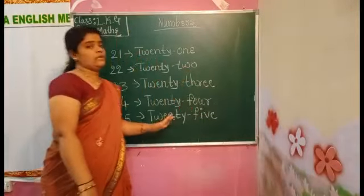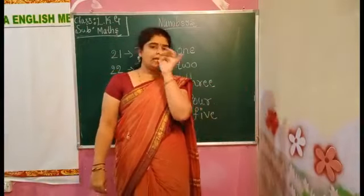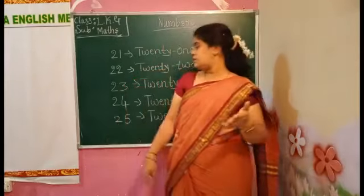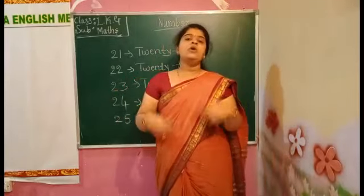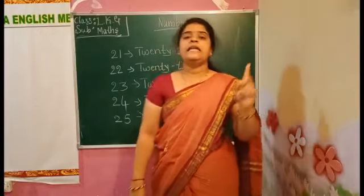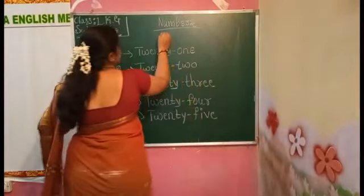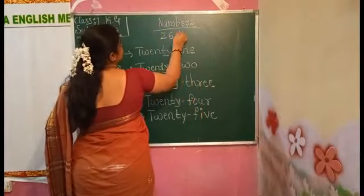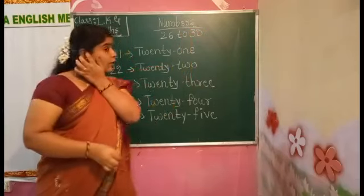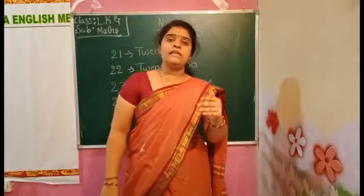21 to 25 — five numbers we learned in our last class. Today we continue with numbers 26 to 30. After 25, the number that will come is 26. How we have to write the 26? After 26, which number will come?